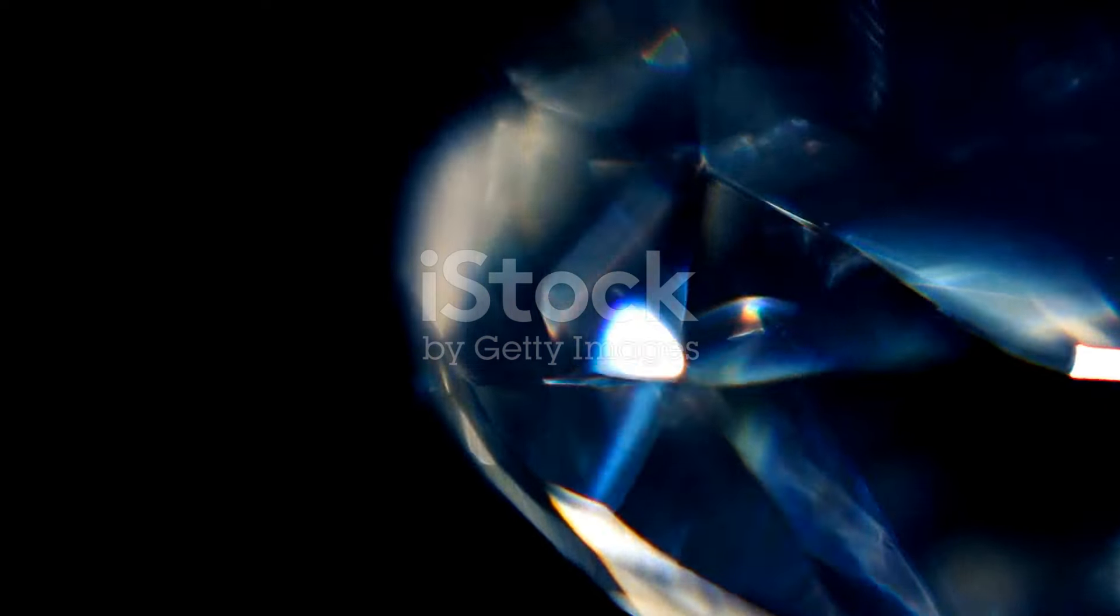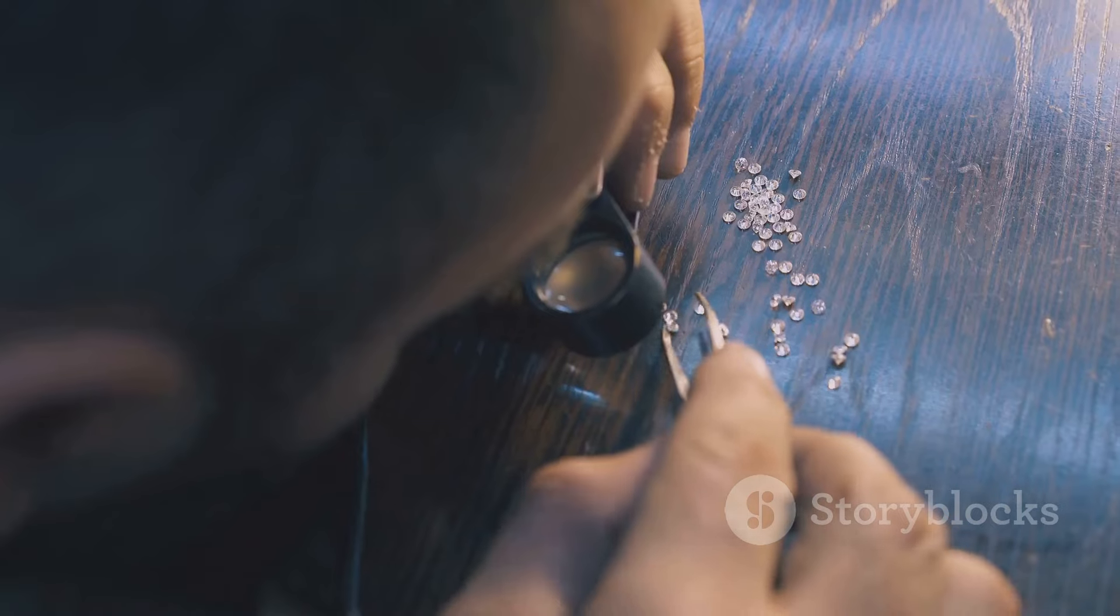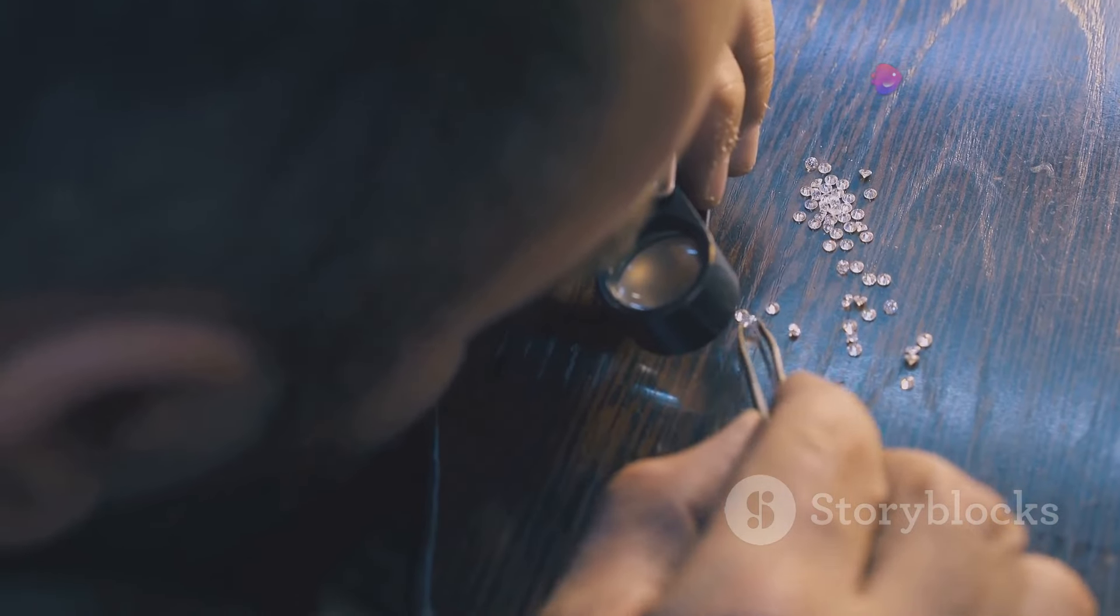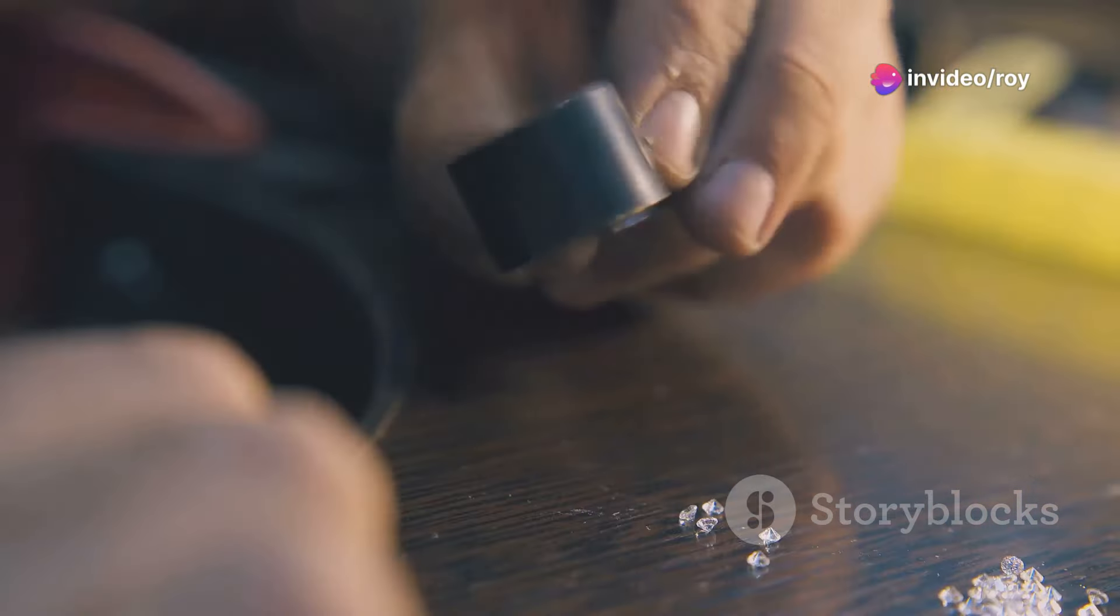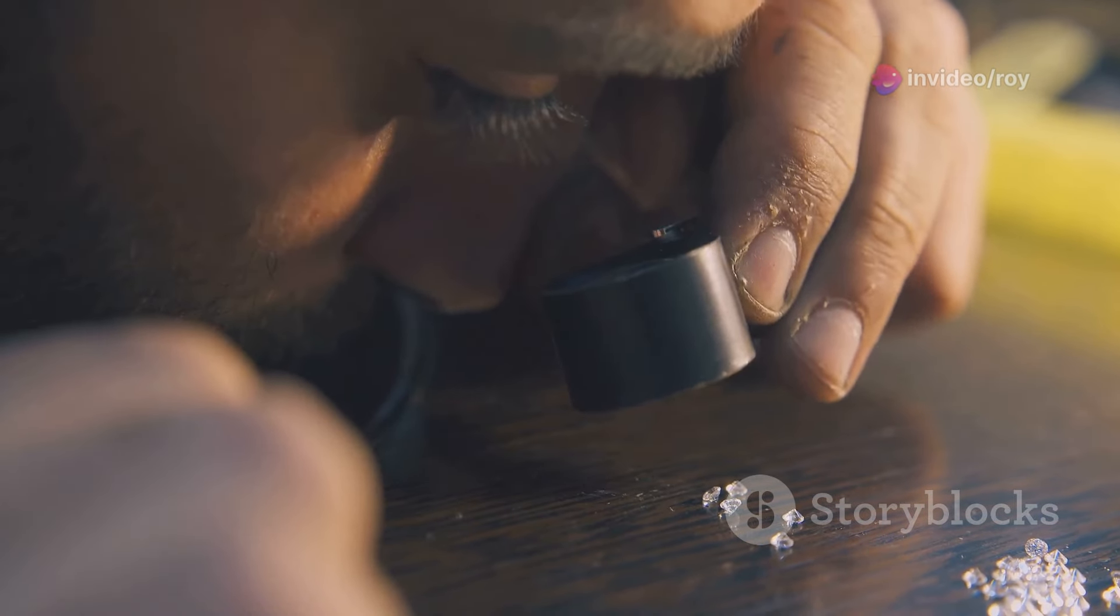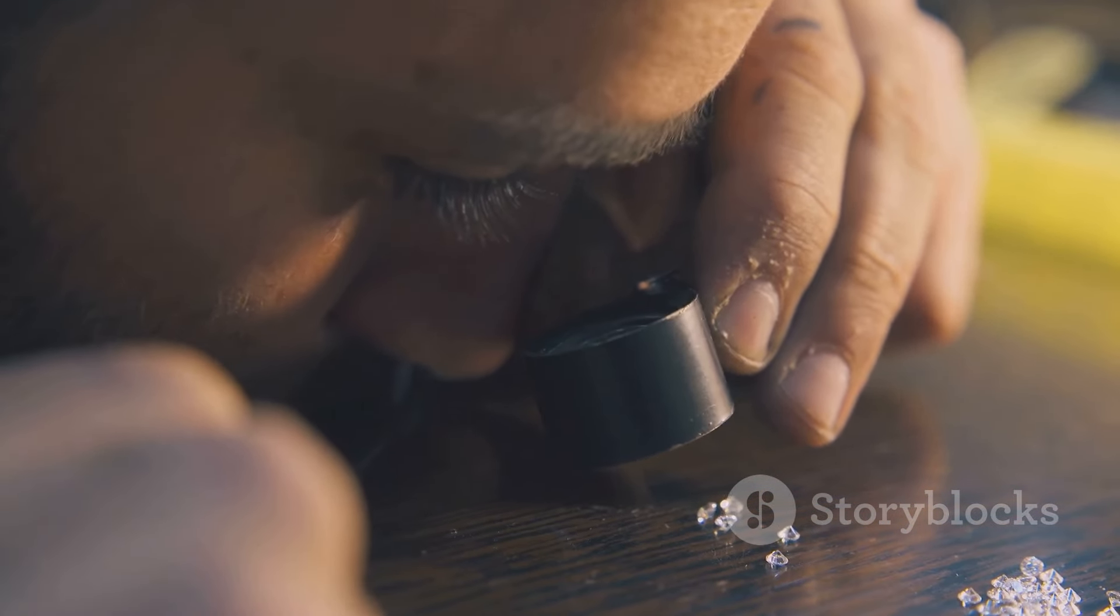Clarity and color grades, while less influential on brilliance, still greatly affect the price. For example, the difference in price between a very slightly included diamond and an internally flawless one can be substantial, even though visually they might look quite similar to the untrained eye.